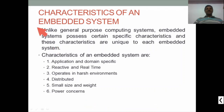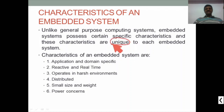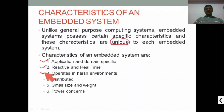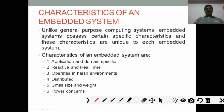An embedded system is usually a special-purpose device — not like a general-purpose device — and each embedded system has its own unique characteristics. The key characteristics to keep in mind are: whether it is application-specific or domain-specific, whether it operates in real time, whether it must operate in harsh environments, whether it is distributed or non-distributed, its small size and weight, and power concerns.